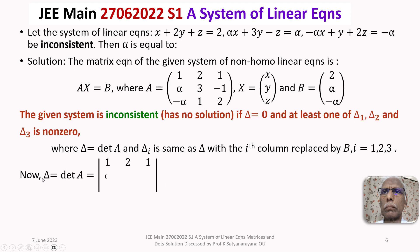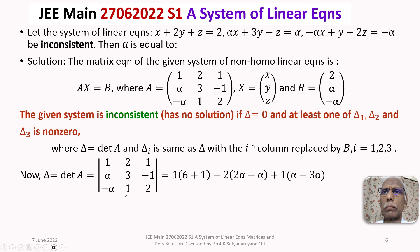Now let us compute delta, the determinant of A: the determinant of the matrix with rows 1, 2, 1; alpha, 3, minus 1; minus alpha, 1, 2. Expanding by the first row and simplifying, we get 7 plus 2 alpha. So delta equals 7 plus 2 alpha.